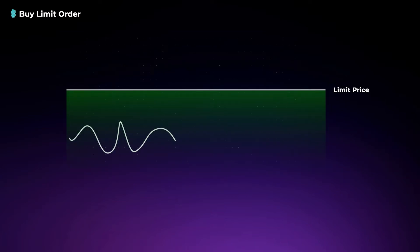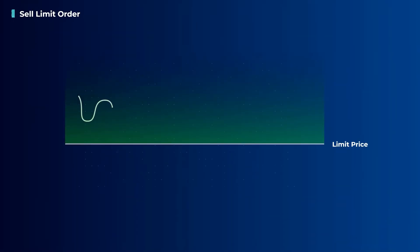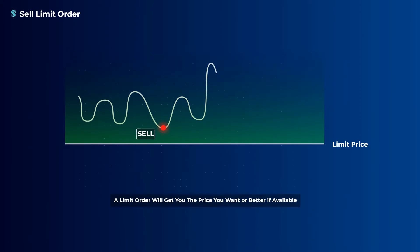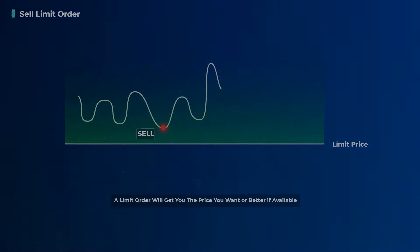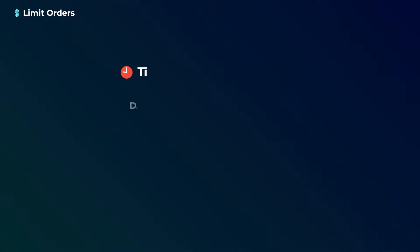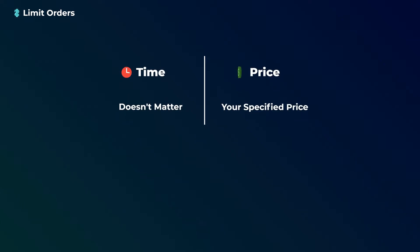An important point: if you place a buy limit order with a limit price higher than the current market price, your order will be executed immediately at the market price, as the market price is already better than your limit price. Similarly, if you place a sell limit order with a limit price lower than the current market, your order will be executed immediately at the market price. So a limit order will always get you the price you want or a better one if available. You should consider it when you want to buy or sell at specific prices and don't mind waiting, but keep in mind that if the price doesn't reach your limit price, your order will not be executed.